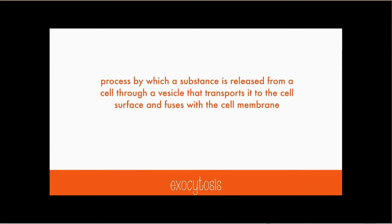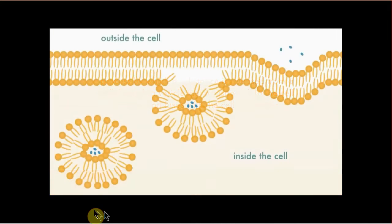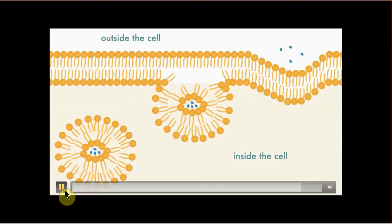Exocytosis is basically the opposite of endocytosis. It's a process by which the substance is released from a cell through a vesicle that transports it to the cell surface and fuses with the cell membrane. A vesicle can merge with the cell membrane because they're both made of phospholipids.